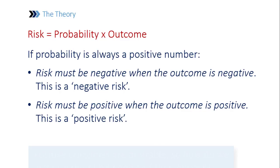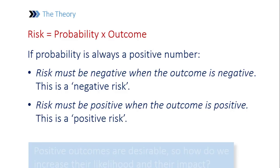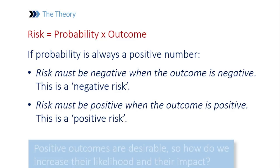So if probability is always a positive number, and we start to apply it to the classic risk equation — which I put here as risk equals probability times outcome — when I started to work in risk assurance, we used risk equals likelihood times impact, which is fine. I think 'probability' is a slightly better word than 'likelihood', and 'outcome' is a little bit more neutral than 'impact', which possibly has more of a negative connotation. Now, that implies that if the probability is always a positive number, then the risk must be negative if the outcome is negative, and it must be positive if the outcome is positive. So I now use these two expressions — negative risk and positive risk — to relate to these two scenarios.